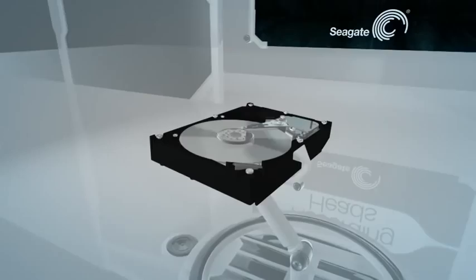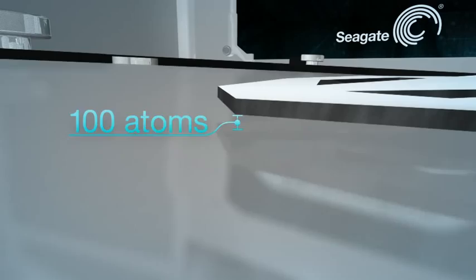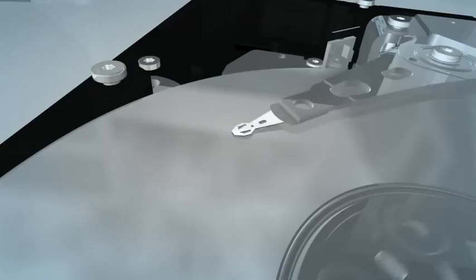All of the information stored on a hard drive travels through the recording head. This tiny electromagnetic wonder hovers less than 100 atoms above the disk, a gap 100 times thinner than a sheet of paper, reading and writing information on a surface spinning up to 15,000 revolutions per minute.